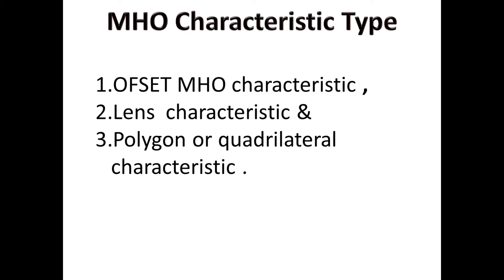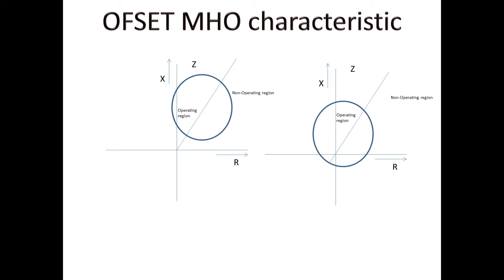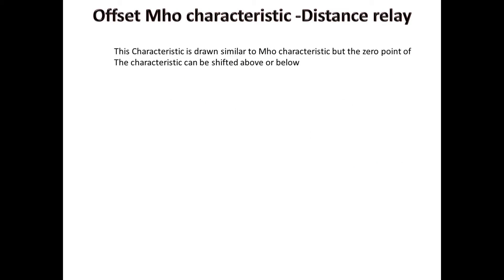Now, we can see one by one offset MOH. It is nothing but the same MOH characteristics but the characteristics may be above the zero value or we can make below the zero value. By using these characteristics, we can isolate the fault nearer to the bus which is back side of the CT. Remaining all same compared to MOH.